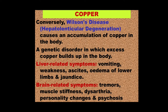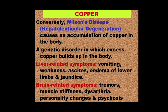Conversely, Wilson's disease — also called hepatolenticular degeneration — causes an accumulation of copper in the body and is a genetic disorder. There are mainly two kinds of manifestations. Liver-related symptoms include vomiting, weakness, arthritis, ascites (fluid accumulation in the abdomen), edema of lower limbs, jaundice, and there can be liver failure. Brain-related symptoms include tremors, muscle stiffness, dysarthria (difficulty in articulation), personality changes, and psychosis.